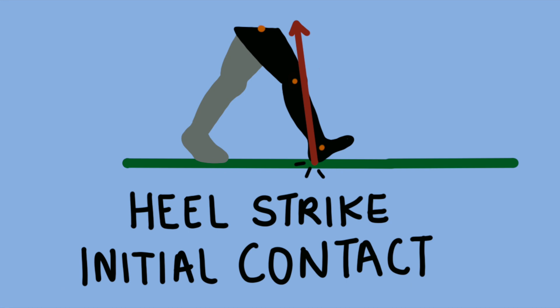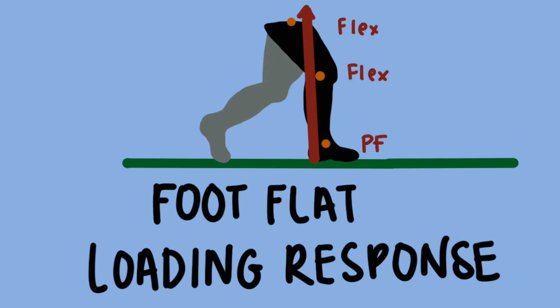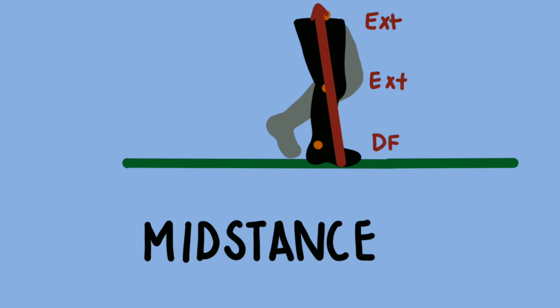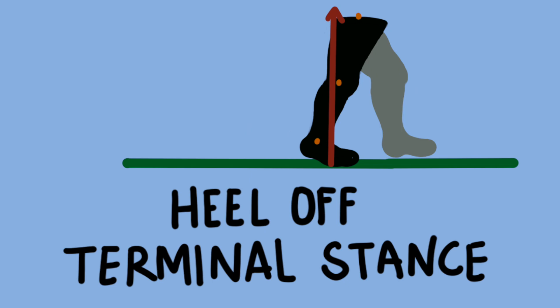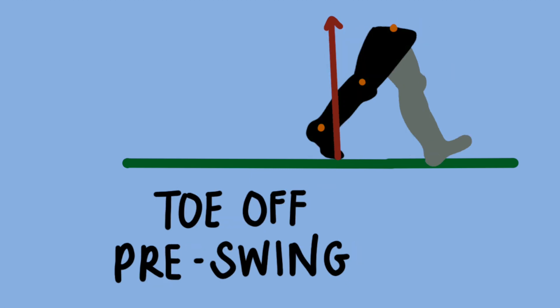We're going to take a quick look at the ground reaction force and the movements that it produces — just remember that your muscles are going to produce a counter force to each of these. At heel strike, these forces cause hip flexion, knee extension, and plantar flexion. In flat foot, they cause hip flexion, knee flexion, and plantar flexion. At mid stance, they cause hip extension, knee extension, and dorsiflexion. At heel off, they cause hip extension, knee flexion, and dorsiflexion, and that's the same for toe off as well.